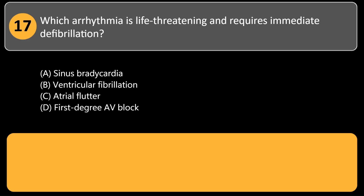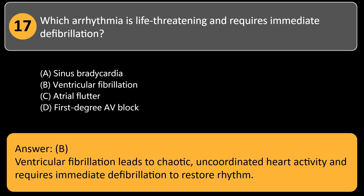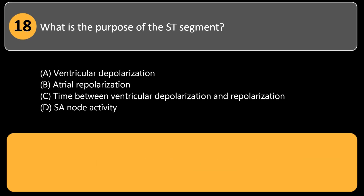Which arrhythmia is life-threatening and requires immediate defibrillation? A. Sinus bradycardia. B. Ventricular fibrillation. C. Atrial flutter. D. First-degree AV block. Answer: B. Ventricular fibrillation leads to chaotic, uncoordinated heart activity and requires immediate defibrillation to restore rhythm.